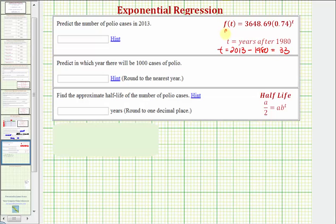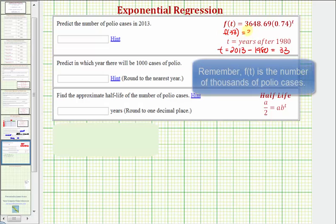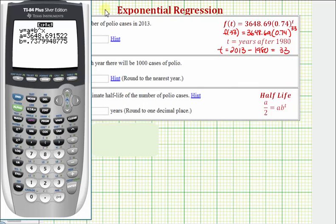So we want to find the function value f(33), which would be a times our base b raised to the power of 33. Let's go ahead and evaluate this on the calculator. And actually, before we do this, let's go ahead and enter our function in y1. So we'll press y equals, enter our exponential decay model, 3648.69 times 0.74 raised to the power of x.